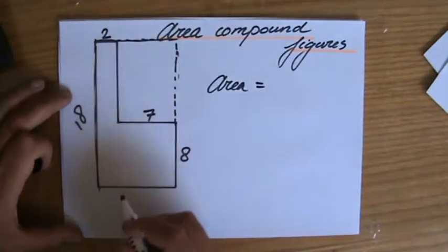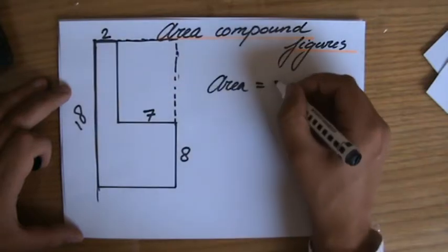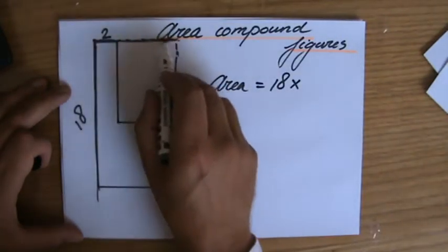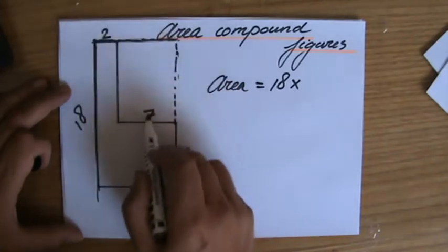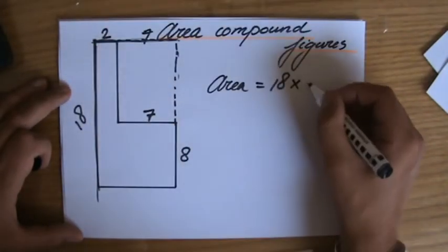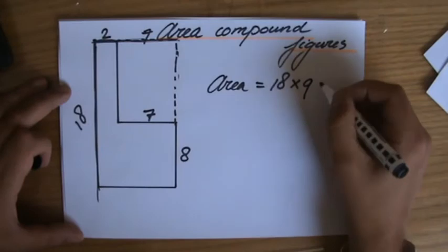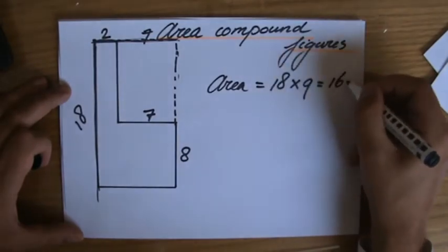Now that is 18 times... Now how long is this one? It is 2 and another 7, so that is 9. 18 times 9, that is 162.